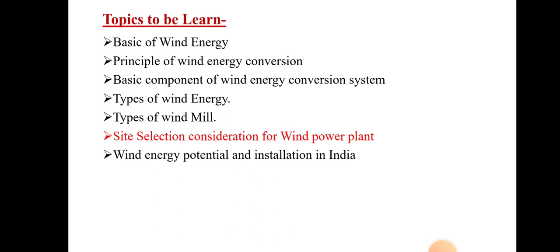We have discussed some topics — the basics of wind energy: how wind is generated and how we can use wind for mechanical power or electrical power output. Then we covered the principle of wind energy conversion — how wind energy is converted into mechanical or electrical power — and basic components of the wind energy conversion system. Then we saw types of wind energy; three types were discussed.